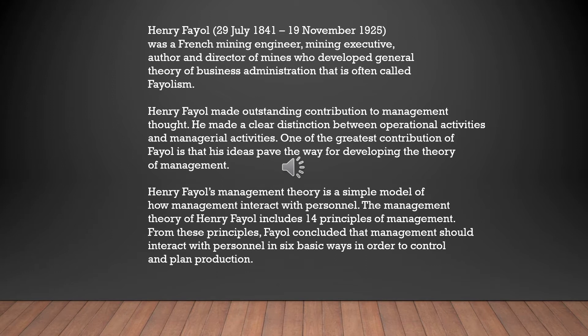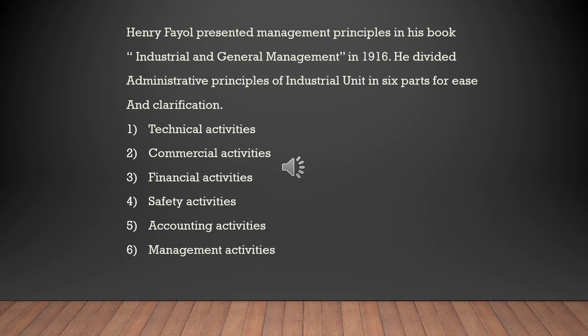Henry Fayol presented his principles of management in his famous book 'Industry and General Management,' published in 1916. Regarding the division of industrial activities, Fayol observed the organization from a manager's point of view and identified six major activities: technical activities, commercial activities, financial activities, safety activities, accounting activities, and management activities.